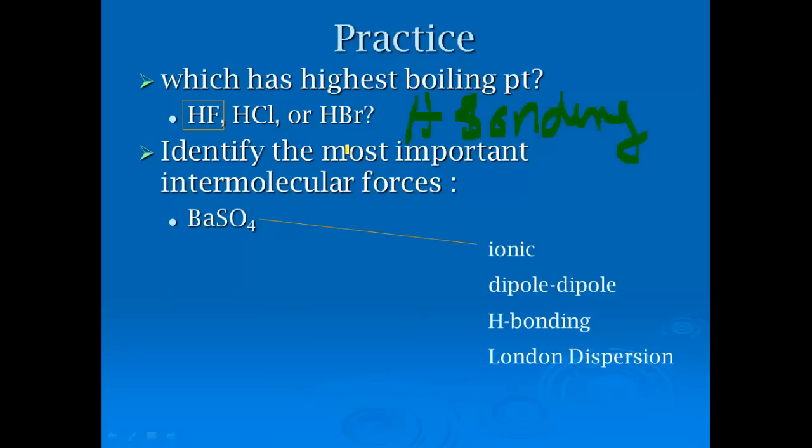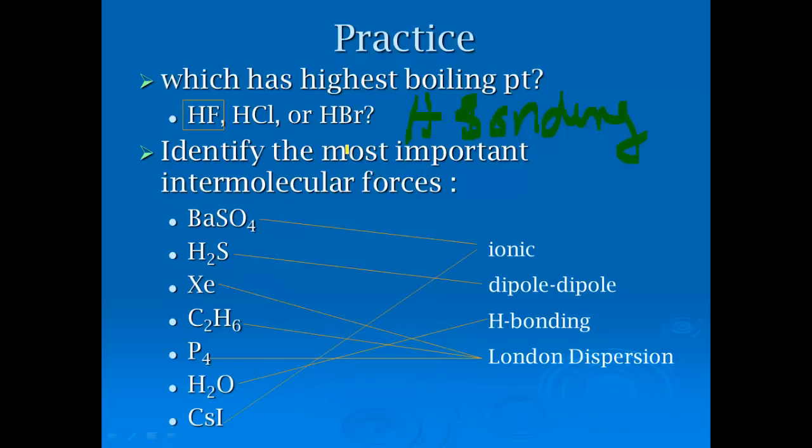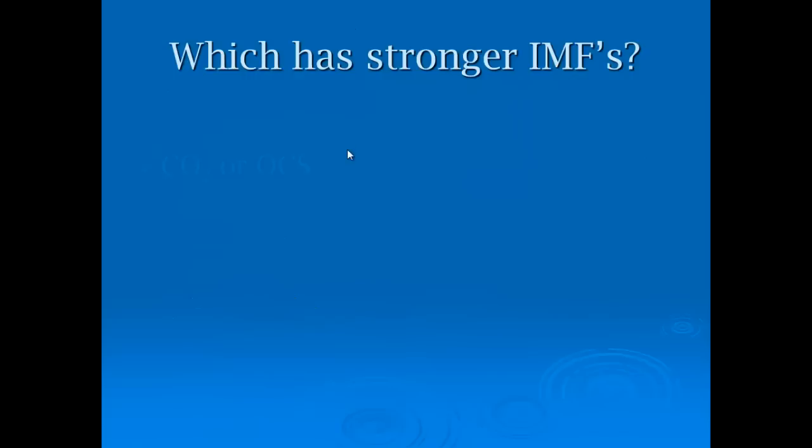If we had to identify the most important intermolecular forces: barium sulfate would be ionic, hydrogen sulfide, dihydrogen sulfide would be dipole-dipole because it's a polar bond, xenon would be London dispersion, it's a nonpolar noble gas. We would also have London dispersion for this hydrocarbon, no polarity to it because there's no lone pairs and the carbon and hydrogen bond is not a polar bond. And then phosphorus in its elemental form would also be London dispersion, it's nonpolar. Then you've got water, which is going to have hydrogen bonding, which again is just a type of dipole-dipole. And then we've got one more ionic compound with cesium iodide.